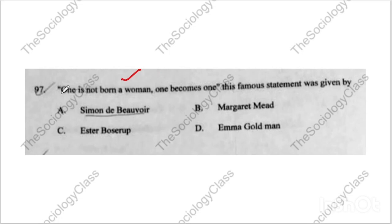Question ninety-seven: 'One is not born a woman, but one becomes one.' This is a very famous quote. The correct answer is A — Simone de Beauvoir. She has a very famous book — please tell me in the comment section which book it is.